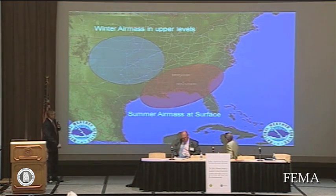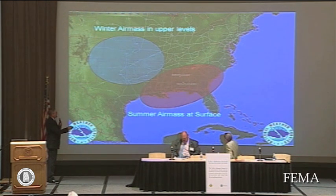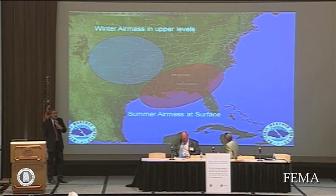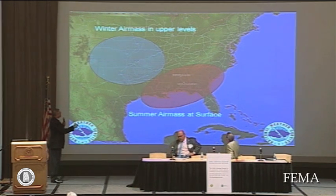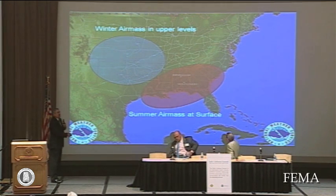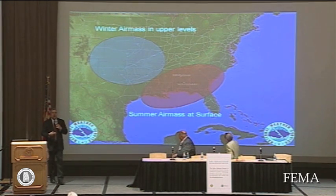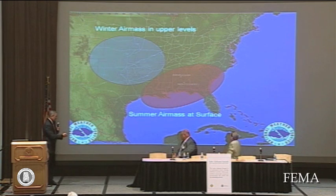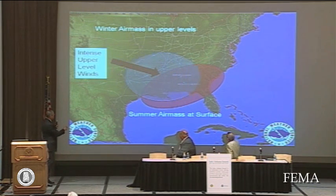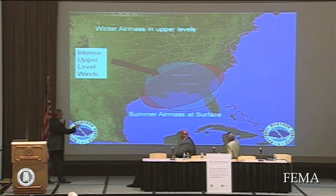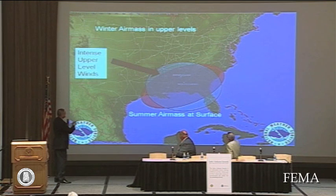The bottom line is, for this setup, we had very warm and humid summer-like conditions near the surface, and back to our northwest we had winter-like conditions — very cold temperatures aloft, almost like mid-winter type conditions. And then on top of it, as the cold air moved over the warm air near the surface, we had intense upper-level winds.